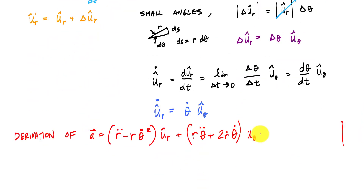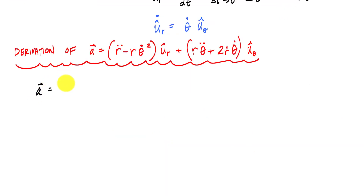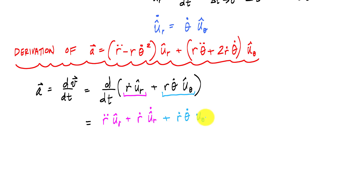To get the acceleration vector, I take a time derivative of the velocity vector and apply the chain rule. For the first group, this gives r_double_dot u_r_hat plus r_dot u_r_dot. For the second part — the time derivative of the r*theta_dot u_theta_hat term — there are three terms: r_dot theta_dot u_theta_hat, plus r theta_double_dot u_theta_hat, plus r theta_dot u_theta_dot.